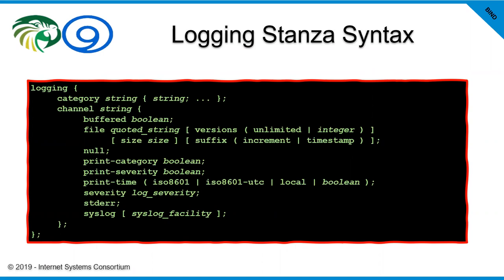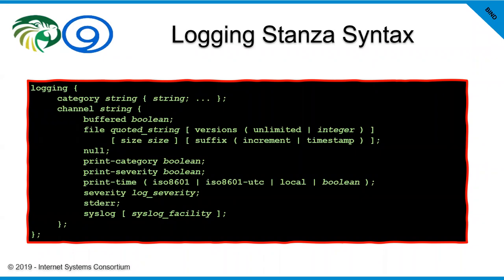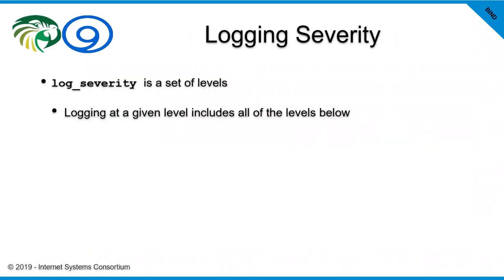Syslog is used in place of the file, null, or standard error statements. Syslog allows us to write to the syslog daemon, and we can write to a specific syslog facility — such as local1, daemon, or others. So you can have categories other than default_syslog also write to your syslog daemon, and the log facility can help you sort things out. Logging at a given level includes all levels below it — a reminder that log severity is a set of levels.